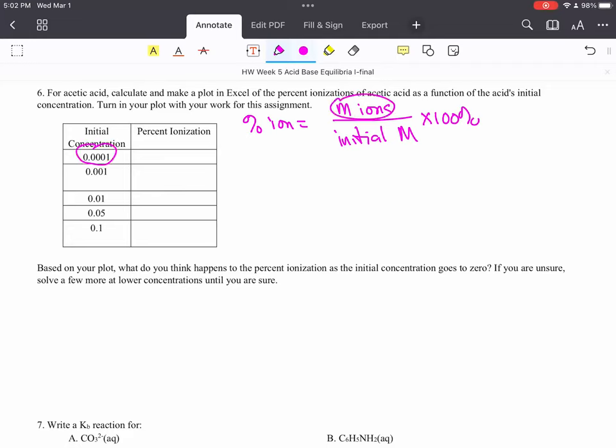And the molarity of the ions is going to be X in our ICE table. So we're going to need an ICE table. And that ICE table is going to tell us our X value, which is basically how much reaction occurs, which is the molarity of ions that forms.